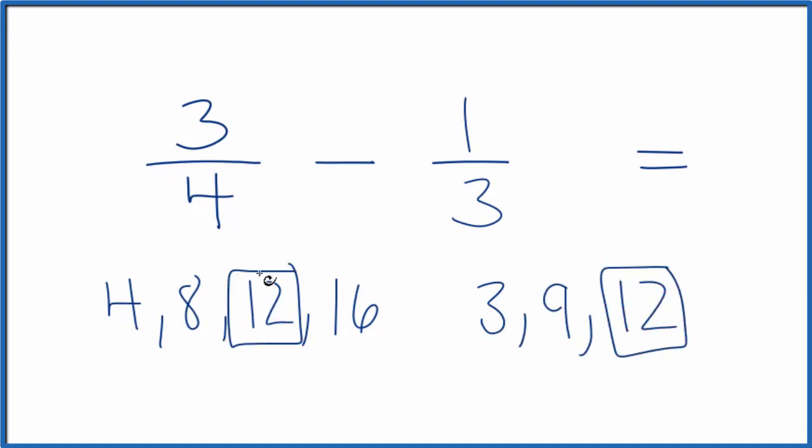12 is the lowest common multiple for both 4 and 3. So if we can get the denominators to be 12, we can just subtract the numerators and we'll have our fraction. What I can do is multiply.